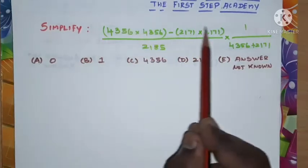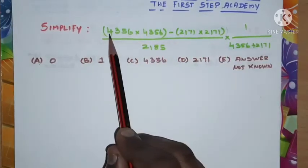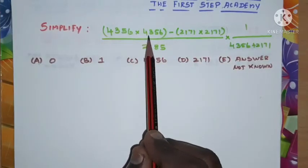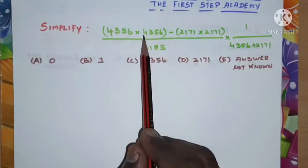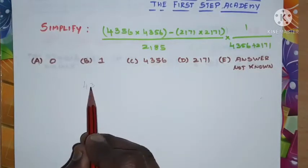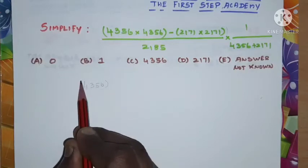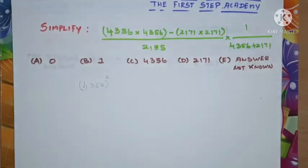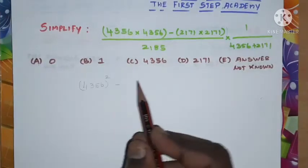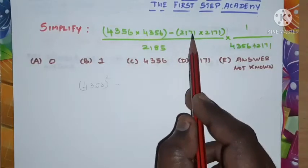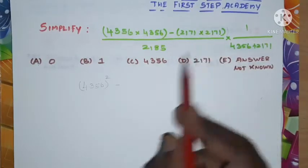So 4356 into 4356, this can be written as 4356 whole squared. The same way, look at here: 2171 into 2171, this also can be written as 2171 whole squared.